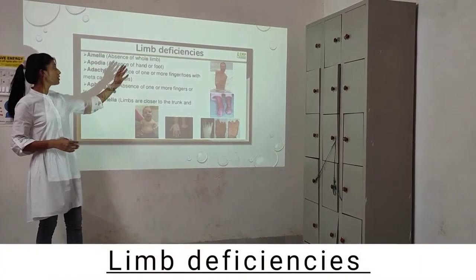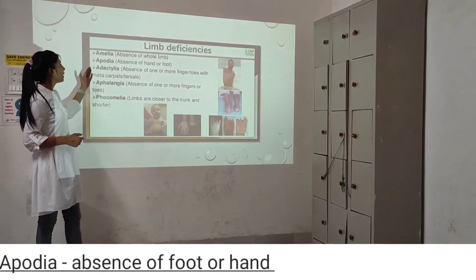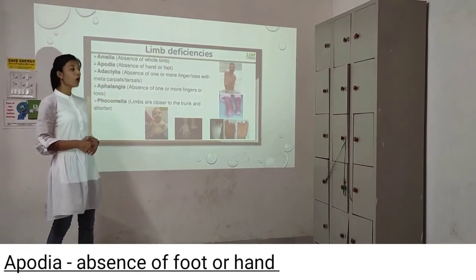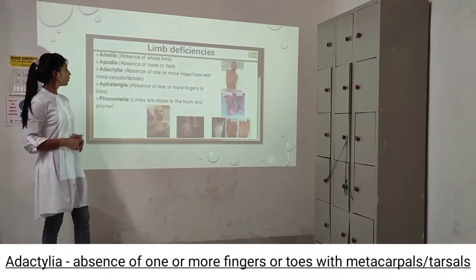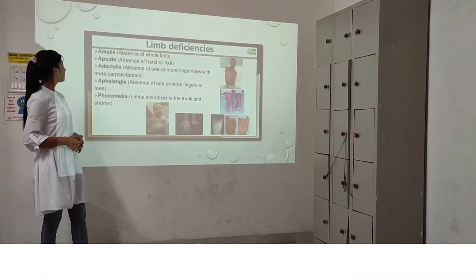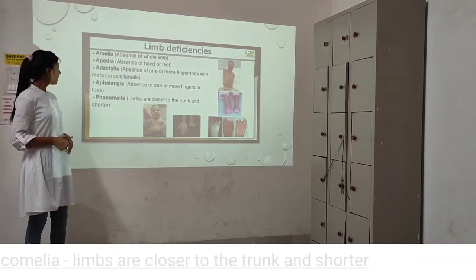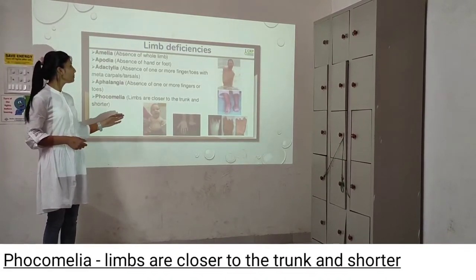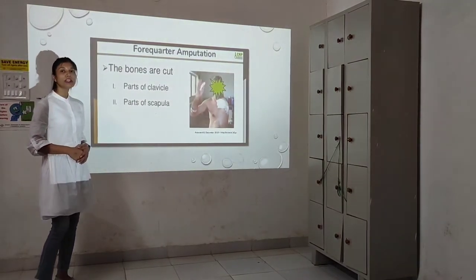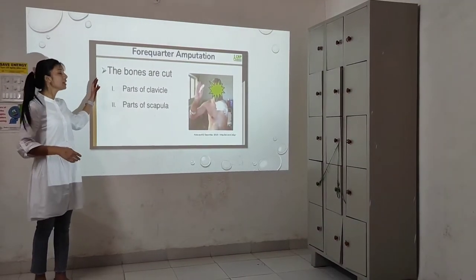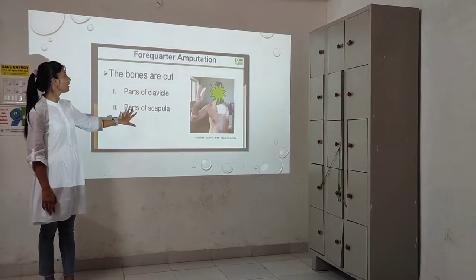Limb deficiencies include: amelia — absence of the whole limb; apodia — absence of hand or foot; adactylia — absence of one or more fingers or toes with metacarpals or metatarsals; aphalangia — absence of one or more fingers or toes. Phocomelia — where the limbs are closer to the trunk or shorter. Forequarter amputation means the bones are cut from the pelvis at the level of parts of the pelvis or parts of the scapula.